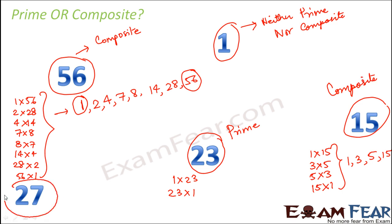Let's look at the last one that is 27. 27 also can be written in many different ways like 1 into 27, 3 into 9, 9 into 3, 27 into 1. So this also has multiple factors and therefore it is composite.